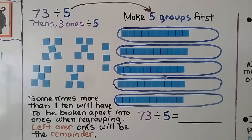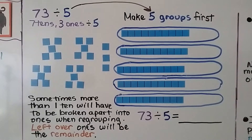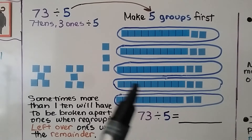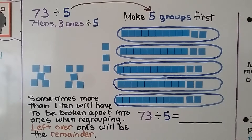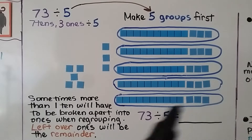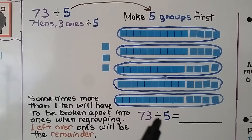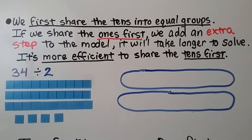We share the ones equally into the five groups — five at a time, then five more, then five more, then five more. We can see there are 14 in each group and 3 left over. So 73 divided by 5 equals 14 remainder 3.